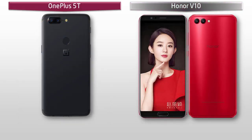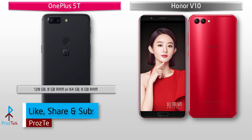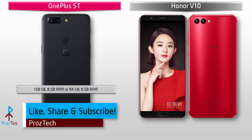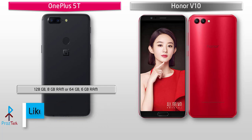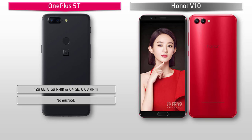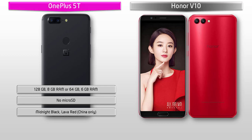Talking about the internal memory, the OnePlus 5T comes with 2 variants: 64 GB and 128 GB of onboard storage with 6 or 8 GB RAM, but with no external microSD support. OnePlus has produced this device in only 2 colors — midnight black and lava red. The lava red color will only be available in China, meaning gold, silver, or white color options are not available for this device.